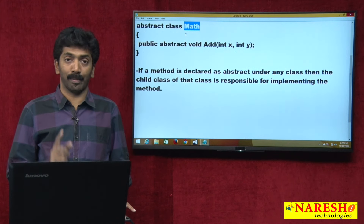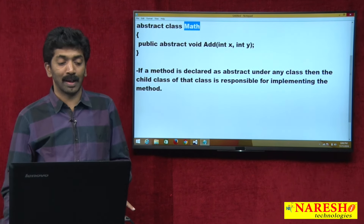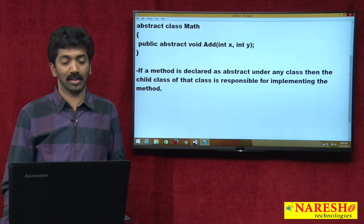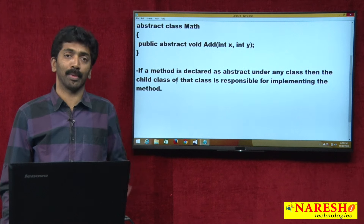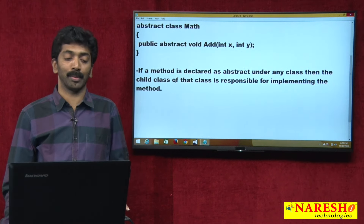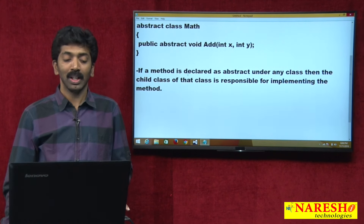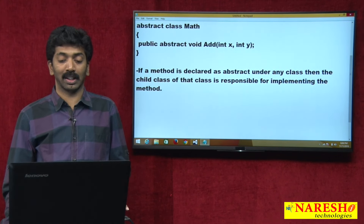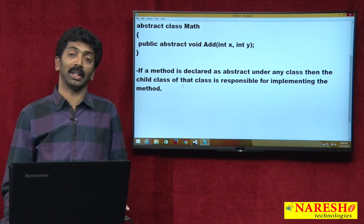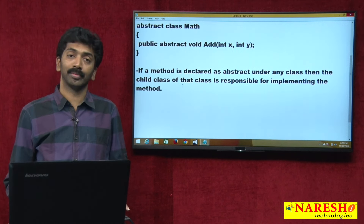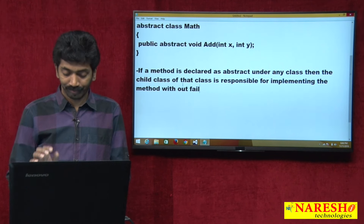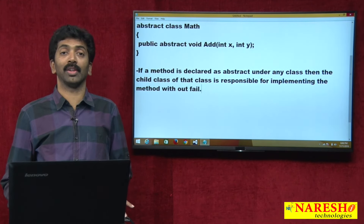Every method that is declared in this abstract class should be implemented by the child class of the abstract class. Whoever is the child should implement — you cannot escape from implementing the methods. That is the rule here. If a method is declared as abstract under any class, then the child class of that class is responsible for implementing the method, without fail.